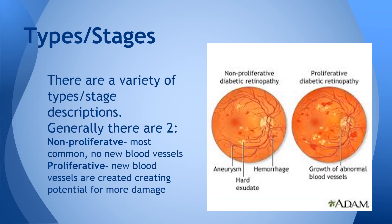Depending on which references you draw from, some describe this in different types or different stages. But most commonly there are two separate stages or types: non-proliferative and proliferative. The difference is that proliferative DR has been present for a longer period of time and creates more damage. Another differentiating factor is that proliferative has new blood vessels, whereas non-proliferative has not yet created new blood vessels.